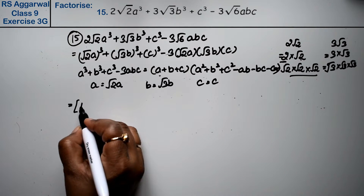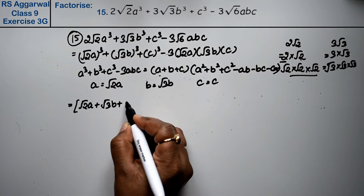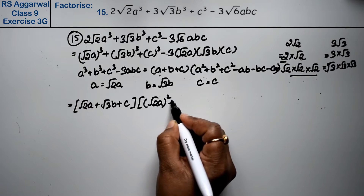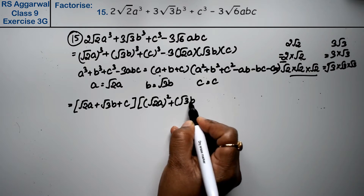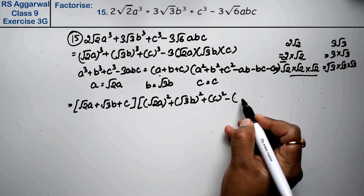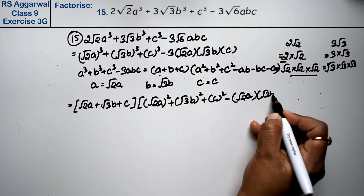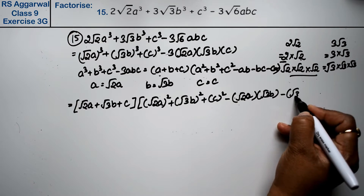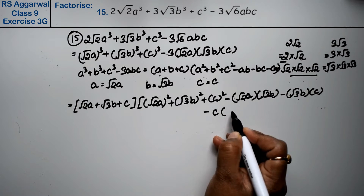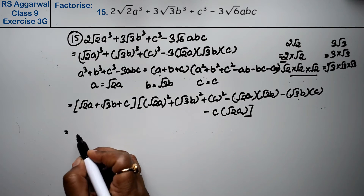So the first factor is (√2·a + √3·b + c), and the second factor is: (√2·a)² + (√3·b)² + c² - (√2·a)(√3·b) - (√3·b)(c) - (c)(√2·a).